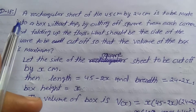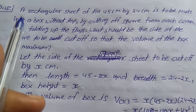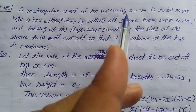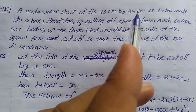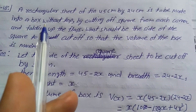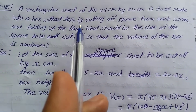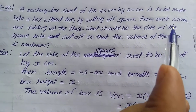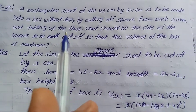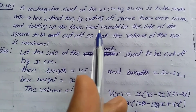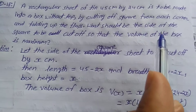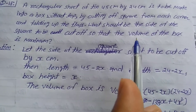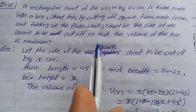Explanation number 18. A right angle sheet of tin 45 cm by 24 cm is to be made into a box without a lid by cutting off a square from each corner and folding up the flaps. What should be the side of the square to be cut off so that the volume of the box is maximum?